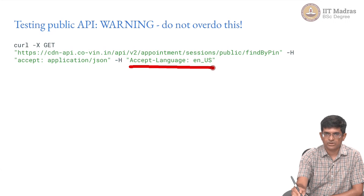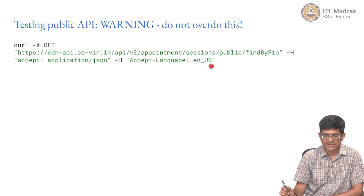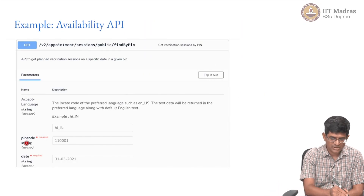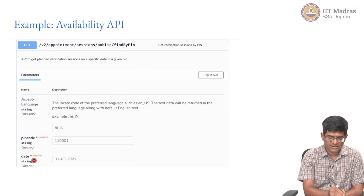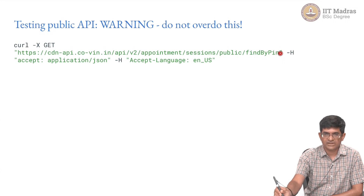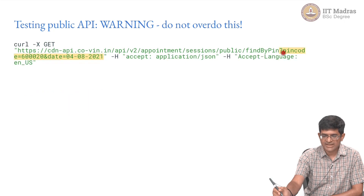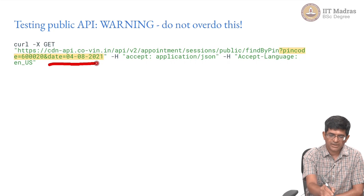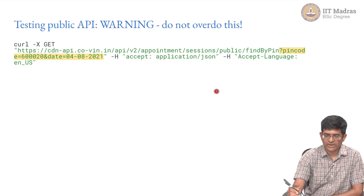What happens if you do this without parameters? It gives an error — the pin code and the date have been marked as required, so it says 'input parameter missing'. To fix that, add a query string with pin code equal to a value corresponding to some place in Chennai and a date — for example, 4th of August 2021. Nothing else changed; the Accept headers are exactly the same as before.